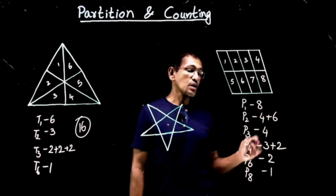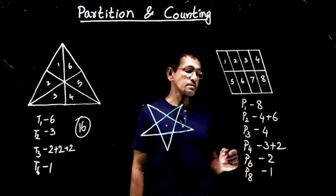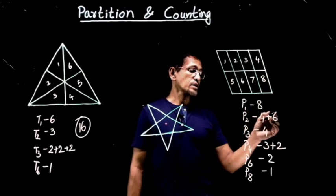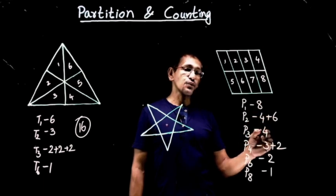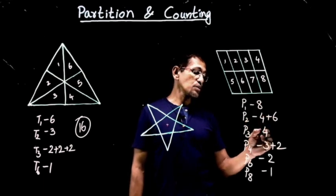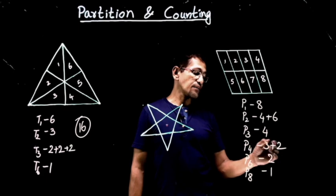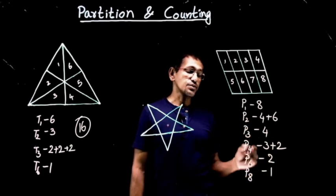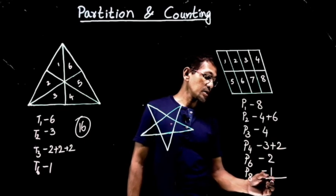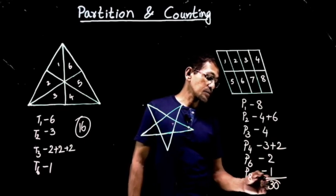When you add it all up: six plus four is ten, plus eight is eighteen, plus four is twenty-two, plus five is twenty-seven, plus two gives us thirty parallelograms in this figure.